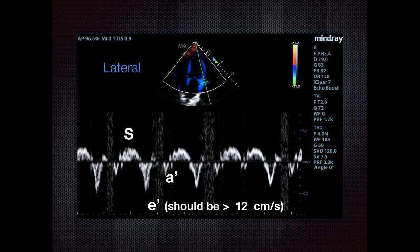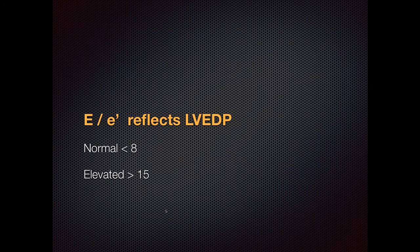You can do the same measurements at the lateral annulus level. The lateral E' normally has a higher excursion than the septal annulus, so the normal values are a little greater — in the normal individual, the lateral E' is greater than 12. It's important to do both sides if you have a patient with regional wall motion abnormality. One last point: the E to E' ratio conveniently reflects LVEDP. Normal end diastolic pressure should be less than 8, and greater than 15 is reflective of high end diastolic pressures.